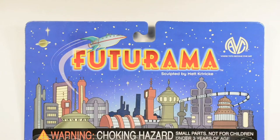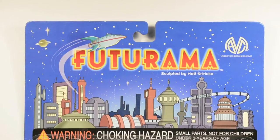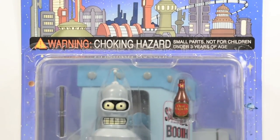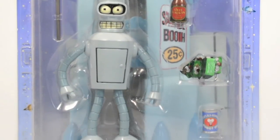So kicking it off, says Futurama, you see his Planet Express ship, you got the cityscape right there. Get a good look at Bender in the front, you see all the accessories that come with him.